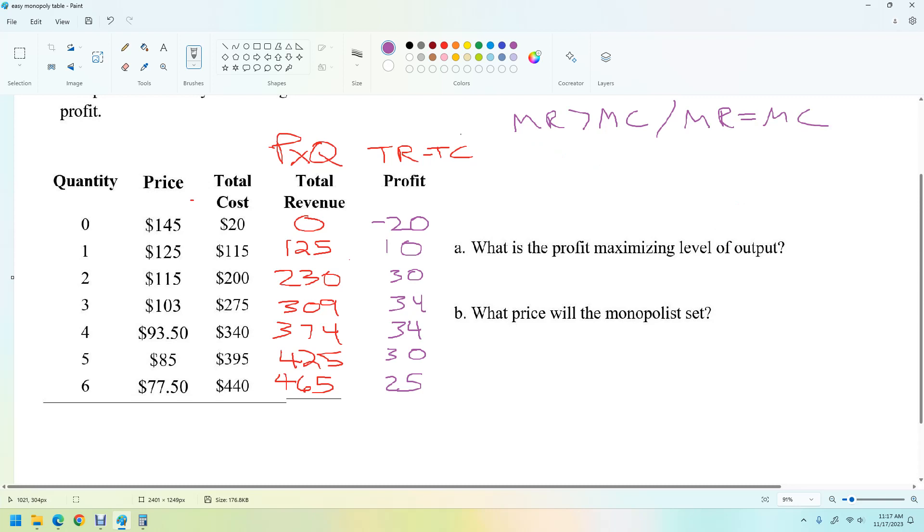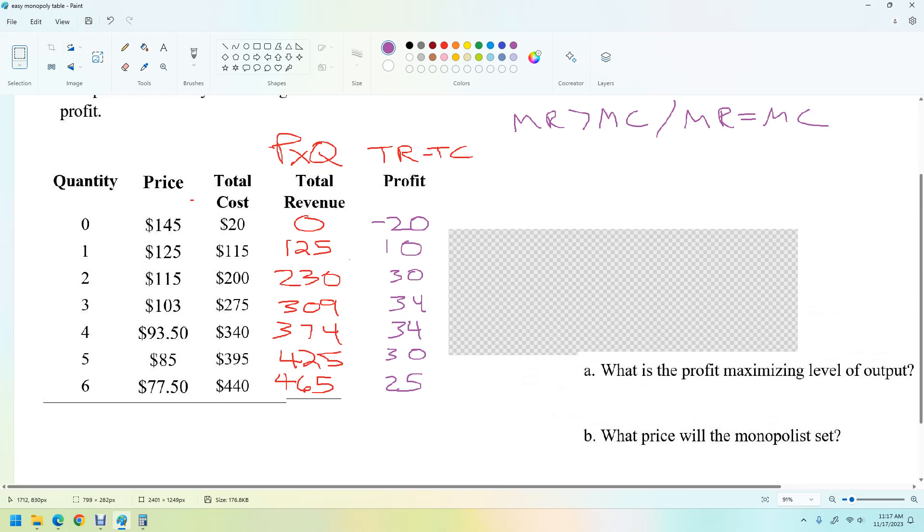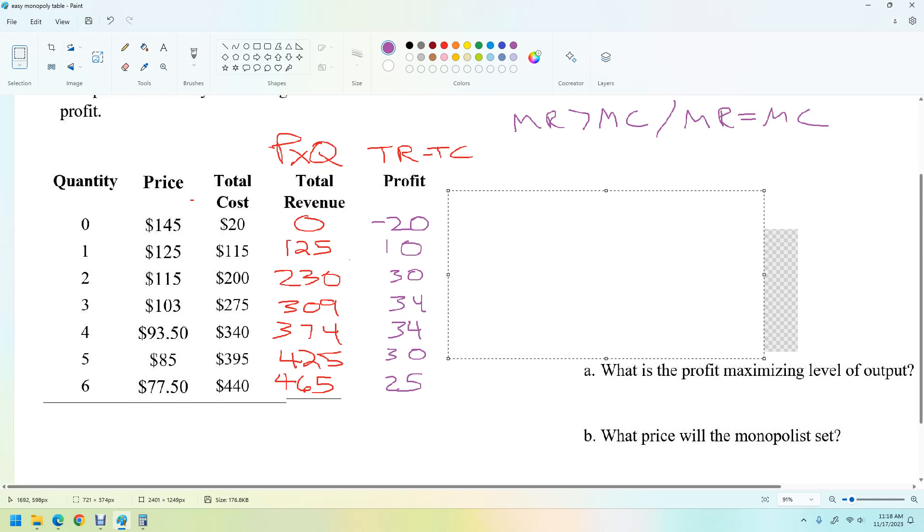So marginal revenue is the change in total revenue divided by the change in quantity. Now, the changes in quantity are going to be really easy because it's just a change of one. OK, so let's calculate all of that. We can do this without a calculator. I don't know. We'll see.